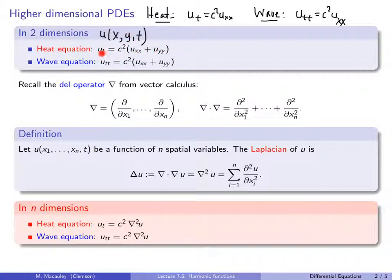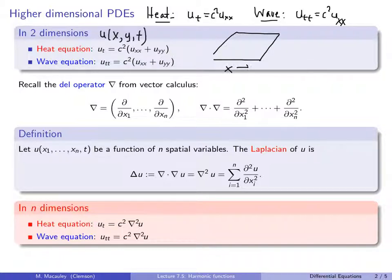This first line is the heat equation in two dimensions. For example, if u represents the temperature at any point in a two-dimensional region at position x and y at time t, that satisfies the heat equation. If u represents the displacement of a square membrane — with waves going back and forth — then this is the PDE that u satisfies.